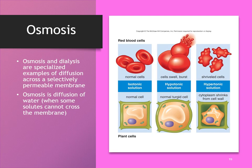Osmosis and dialysis are two specialized examples of diffusion where a substance moves across a selectively permeable membrane. Osmosis is the diffusion of water — some solutes can pass, but the majority cannot, leaving water as the primary substance that moves across the membrane.